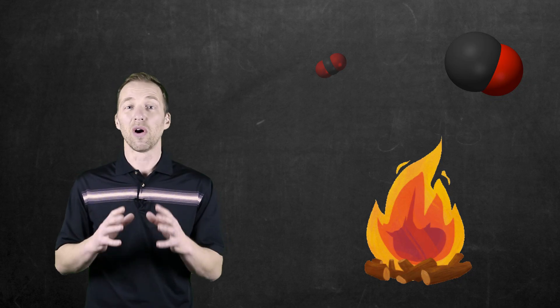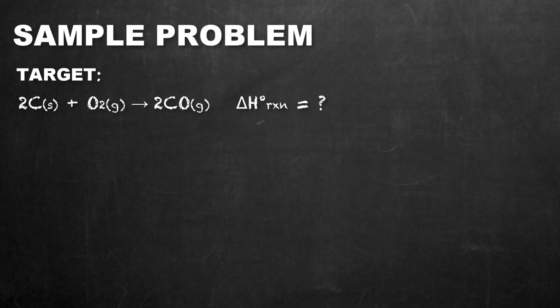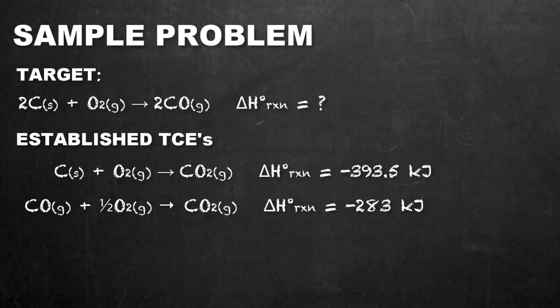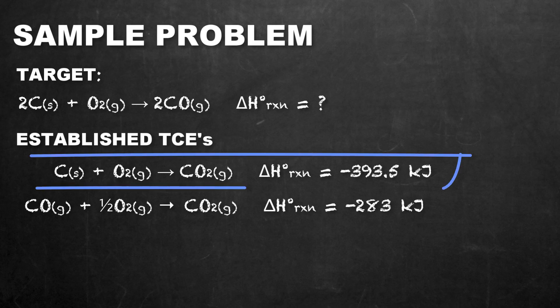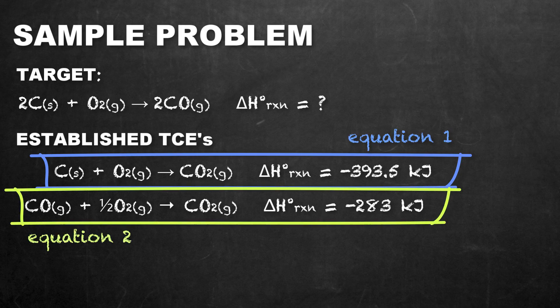Let's look at an example involving this mechanism. Our target equation involves two moles of carbon combusting in the presence of oxygen to produce two moles of carbon monoxide. With Hess's Law, we are provided with a couple of known equations with known enthalpy changes. Equation 1 is the combustion of carbon to produce carbon dioxide. Equation 2 is the combustion of carbon monoxide in the presence of oxygen to produce carbon dioxide.